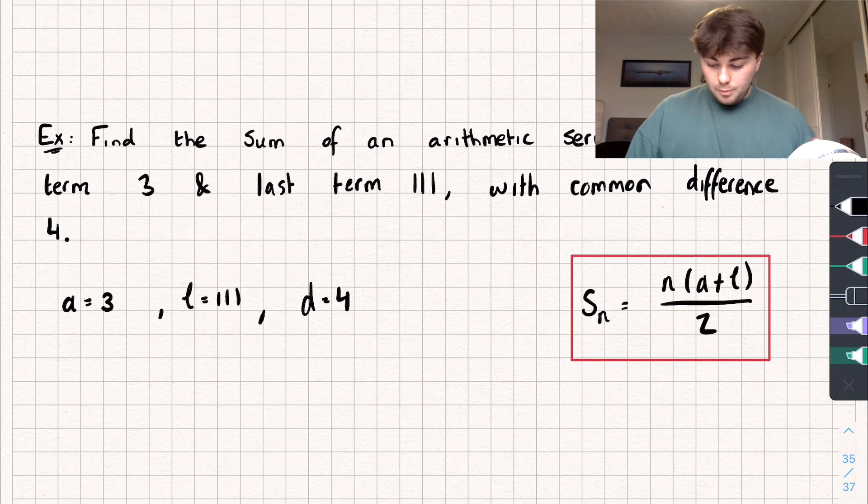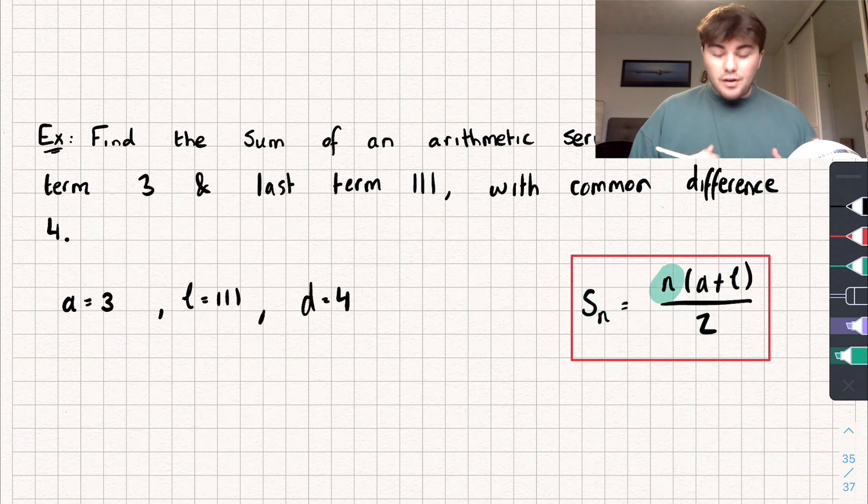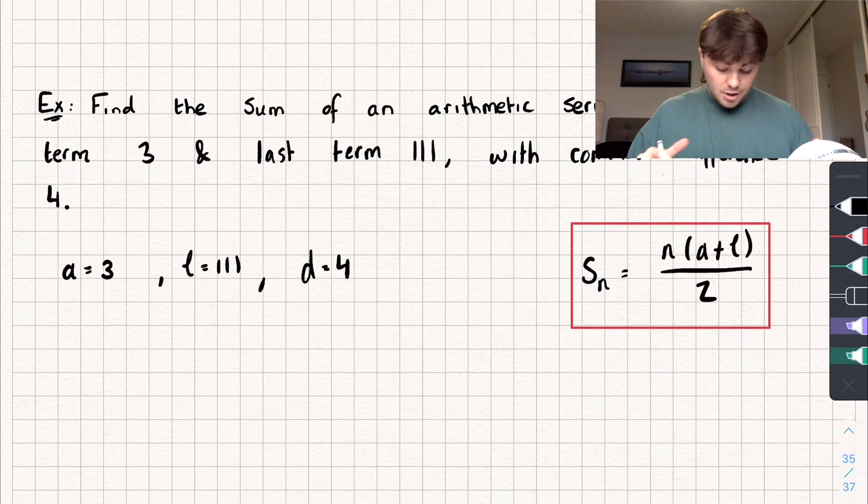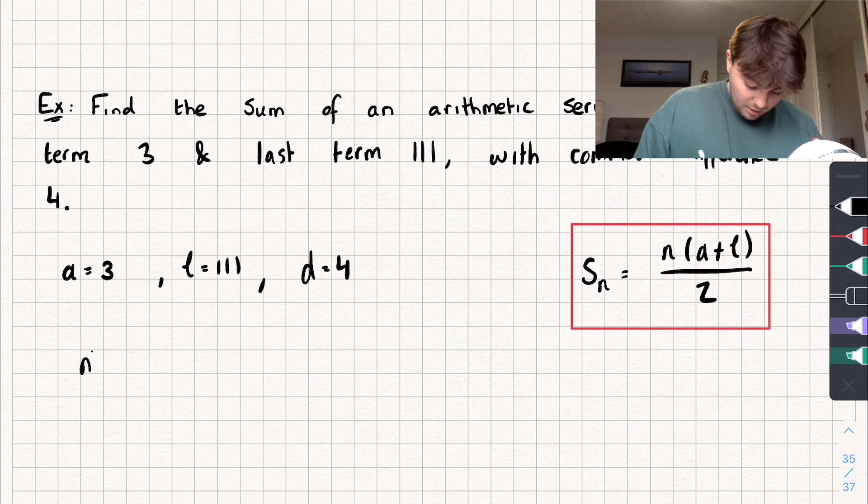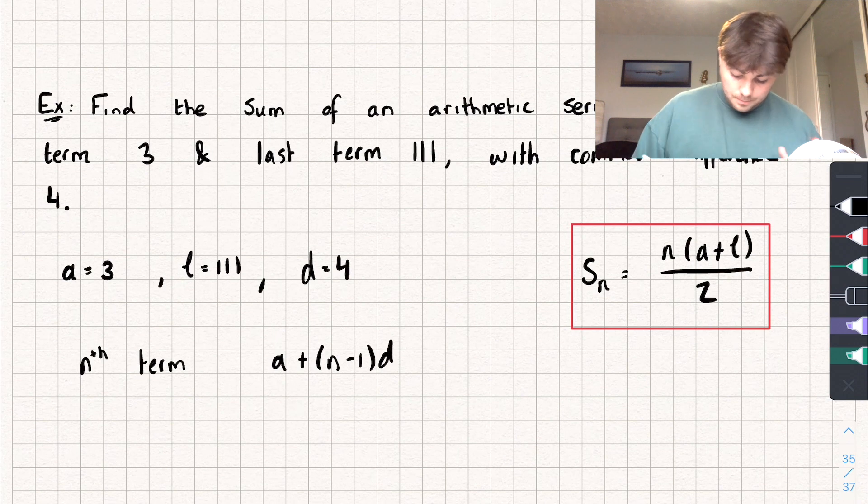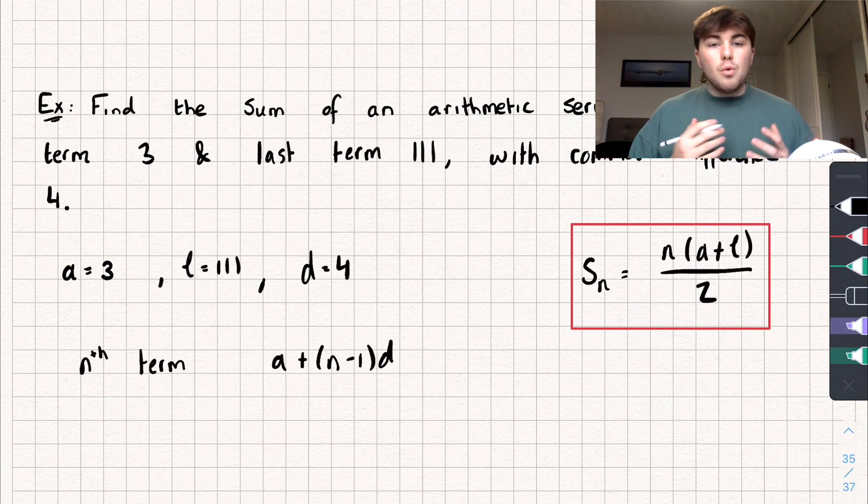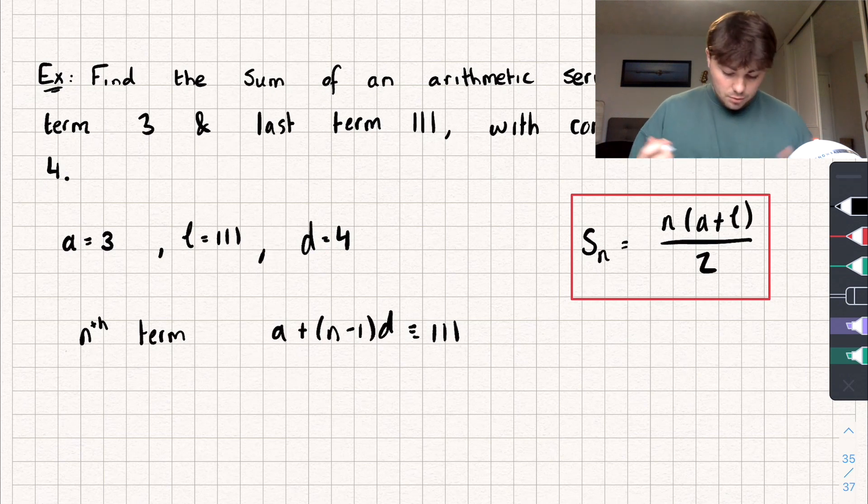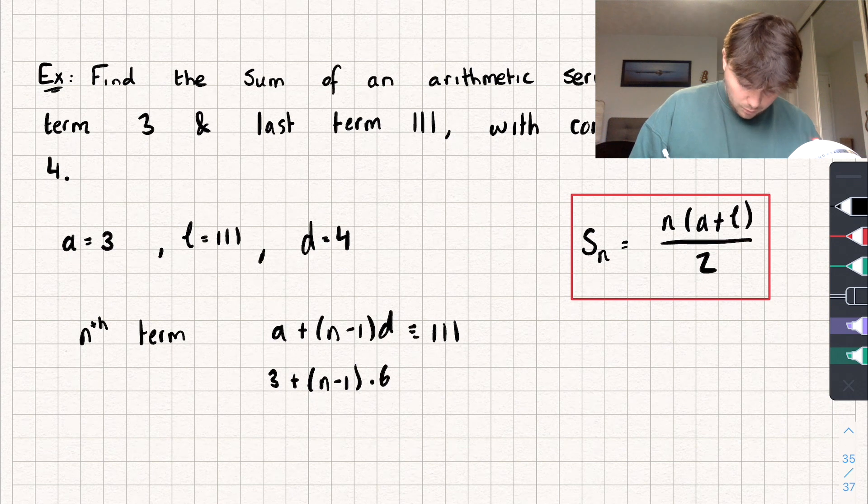Now let's think, let's look over at our formula here in this red box, and you'll notice that I need to know a value of N. So how many terms are there that I need to sum up to in this sequence? Well, I haven't been given that information, so what we can do is we can use the formula for the nth term. That says that the nth term is going to be equal to A plus (N minus 1)D. And I want to know what value of N the last term is, because that's where I want to sum up to. So if I set this equal to 111, and I substitute in the value of A and D that I know, so I've got 111 is equal to 3 plus (N minus 1) times 4.